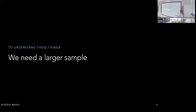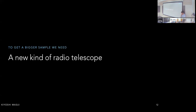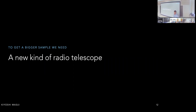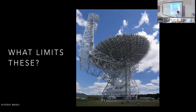To build a bigger sample and figure out what fast radio bursts are, we need a new type of radio telescope. Let's think about what limits a telescope like the Green Bank Telescope, which is very near and dear to my heart. What prevents it from seeing lots of fast radio bursts?